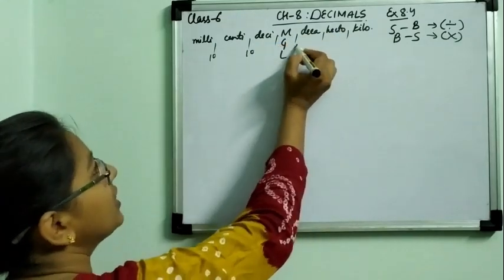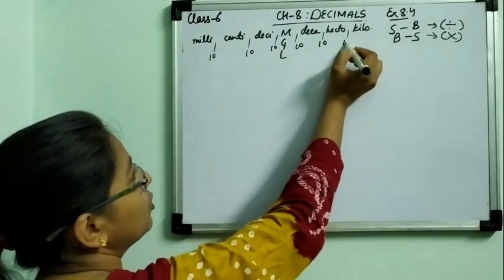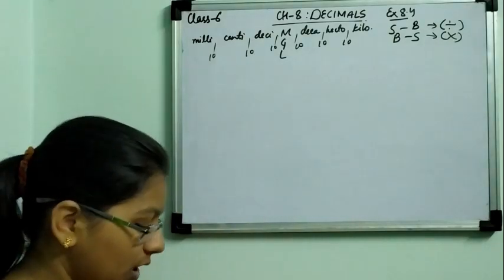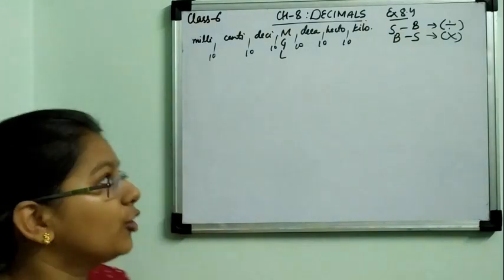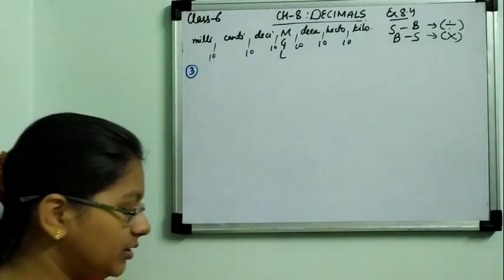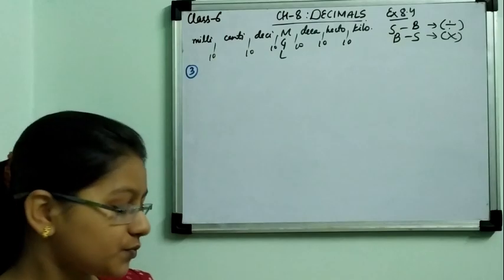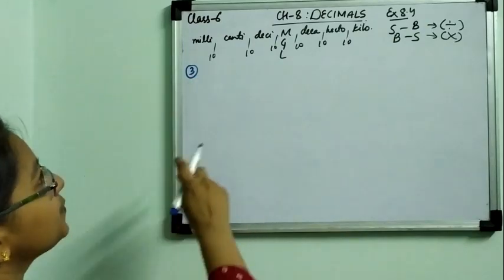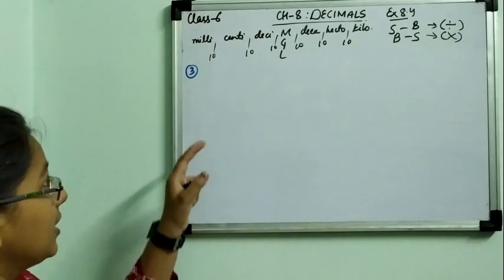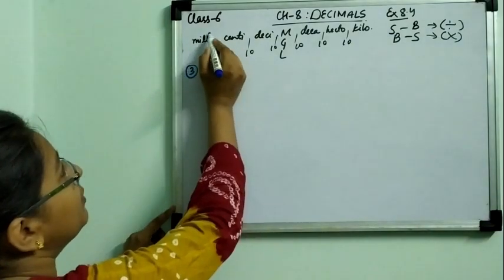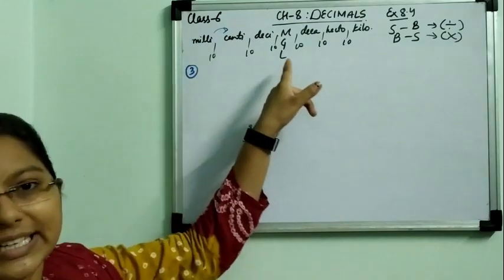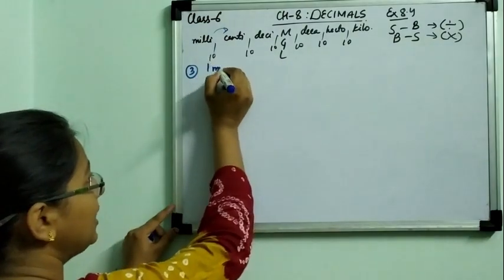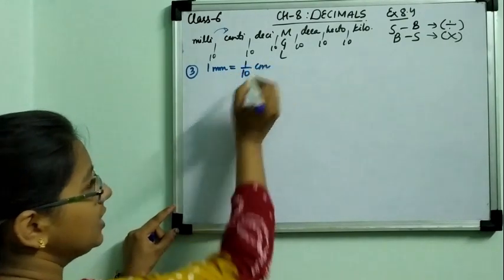We completed up to question number 2 previously. Today we start from question number 3. In question number 3 it says: express as centimetre. We have to convert to centimetre, and all the parts are given in millimetre. So we are converting milli to centi. Milli is small, centi is big — small to big means we divide. We divide by 10, since the gap is 10. So 1 millimetre equals 1 upon 10 centimetre.